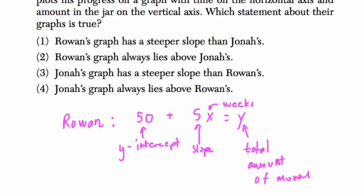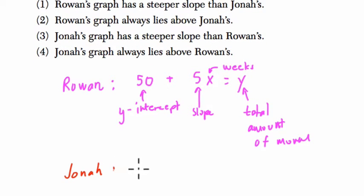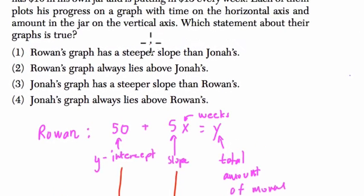They start with $10 and then $15 each week. So for Jonah, we're starting off with 10. And so our y-intercept is now $10 plus $15, our slope, for every week. And that's the total amount of money for Jonah.